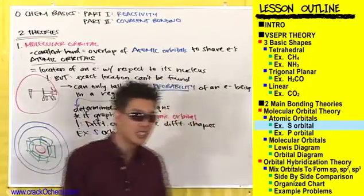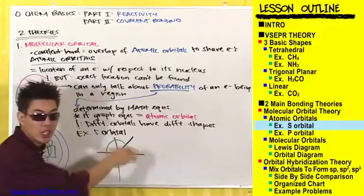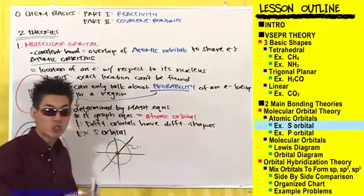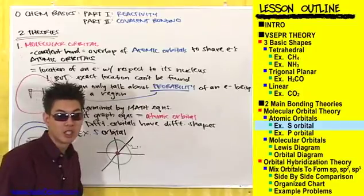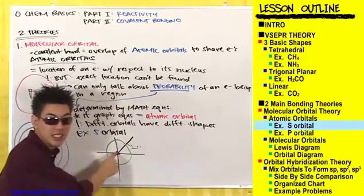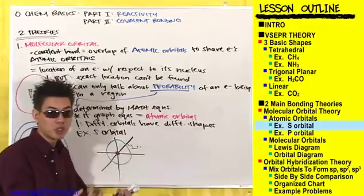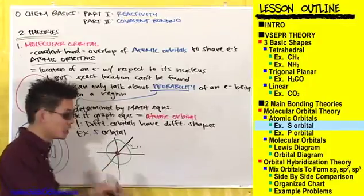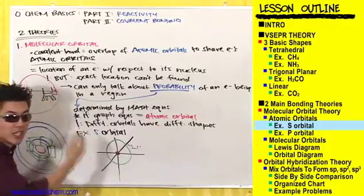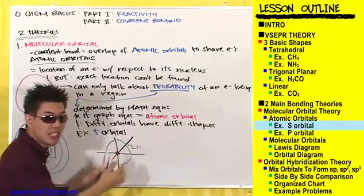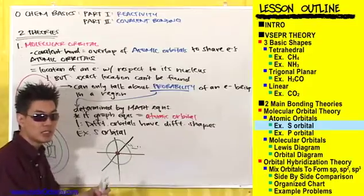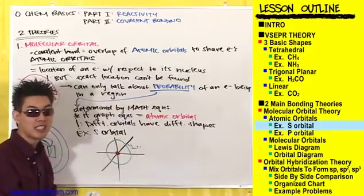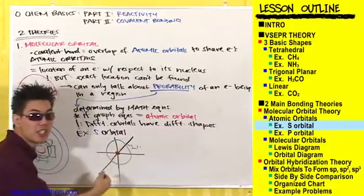What's preventing these electrons from going outside their sphere? There are negatively charged electrons trapped in this sphere. What's trapping them inside is the protons inside the nucleus — protons are positively charged, electrons are negatively charged, opposites attract. There's a plus charge on the nucleus and a negative charge on the electrons, and this is what keeps the electrons inside this sphere.